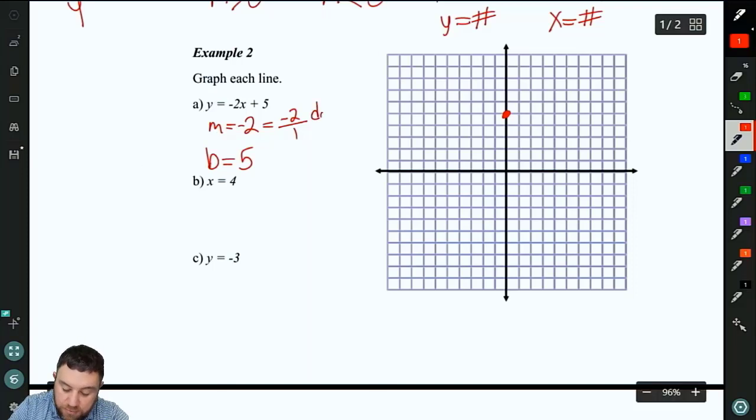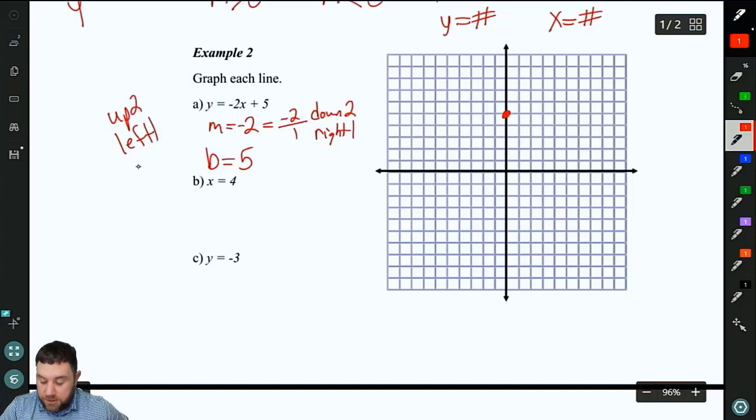Negative 2 over 1, we move down 2, right 1. You could also move up 2, left 1. So either way would work. So down 2, right 1, down 2, right 1. And I like to go ahead and, you technically only need 2 points, but I like to go ahead and just fill in the whole graph with points. That way, as I'm drawing my line, I can stay on track a little bit better. I'm going to call that line A since it's example 2a.